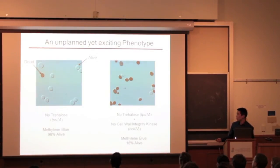While on the right here, I have a trehalose and a target gene double mutant. And you see that most of the cells are dark, meaning that they are only 18% alive.